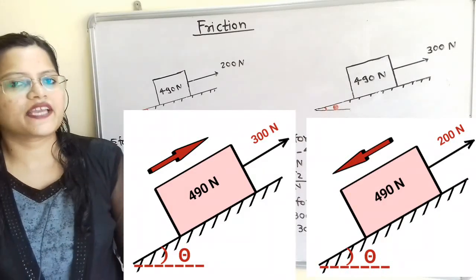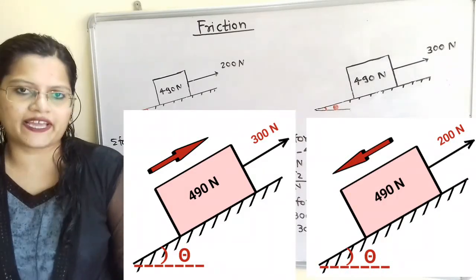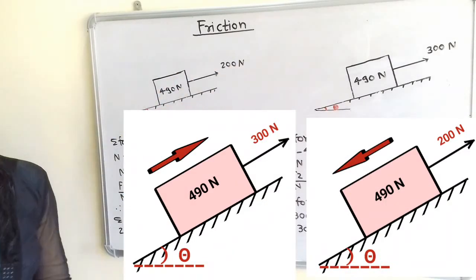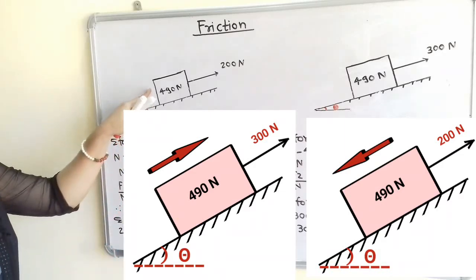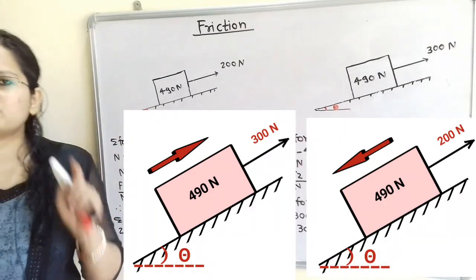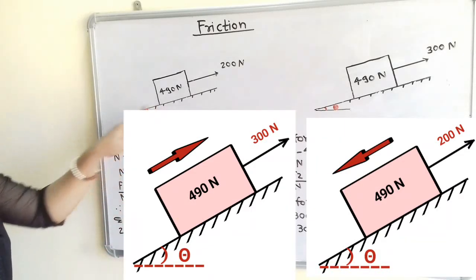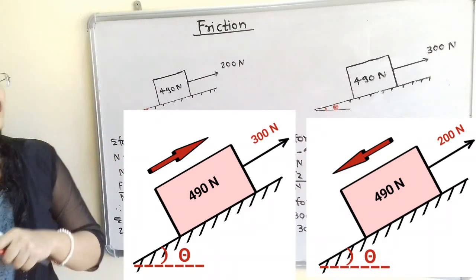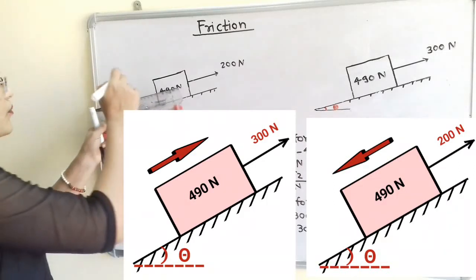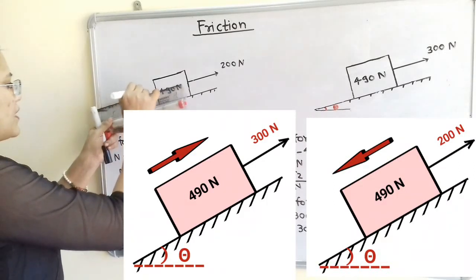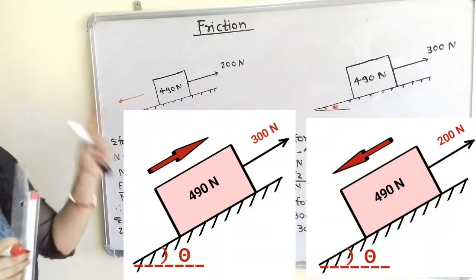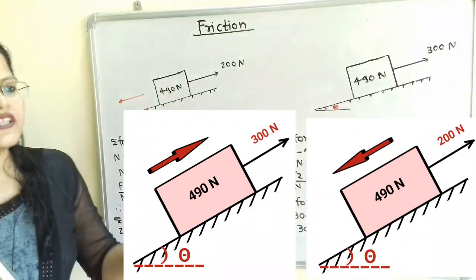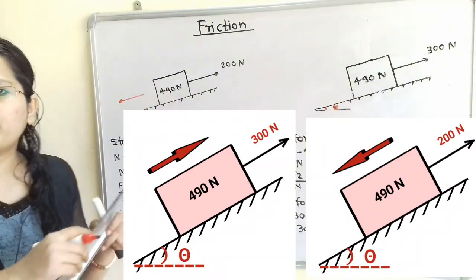Let us understand the given question with the help of a diagram. The 490 N block, when supported with a 200 N force, is moving in the downward direction on an inclined plane making angle theta with the horizontal line. The same block, when pulled by a 300 N force, is moving in the upward direction.